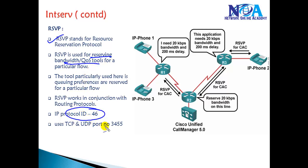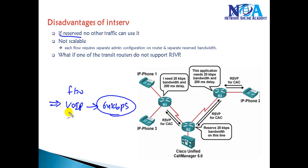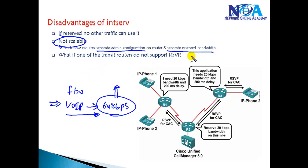RSVP works with protocol ID 46 and TCP/UDP port number 3455. A major drawback of the Integrated Services model is that if bandwidth is reserved for a specific flow — say 64 Kbps for VoIP — no other traffic can use that bandwidth even when that voice traffic is not active. It is not scalable for large networks because it requires separate administrator configuration and bandwidth reservation on each device. Additionally, if any transit router does not support RSVP, no reservation can be made.